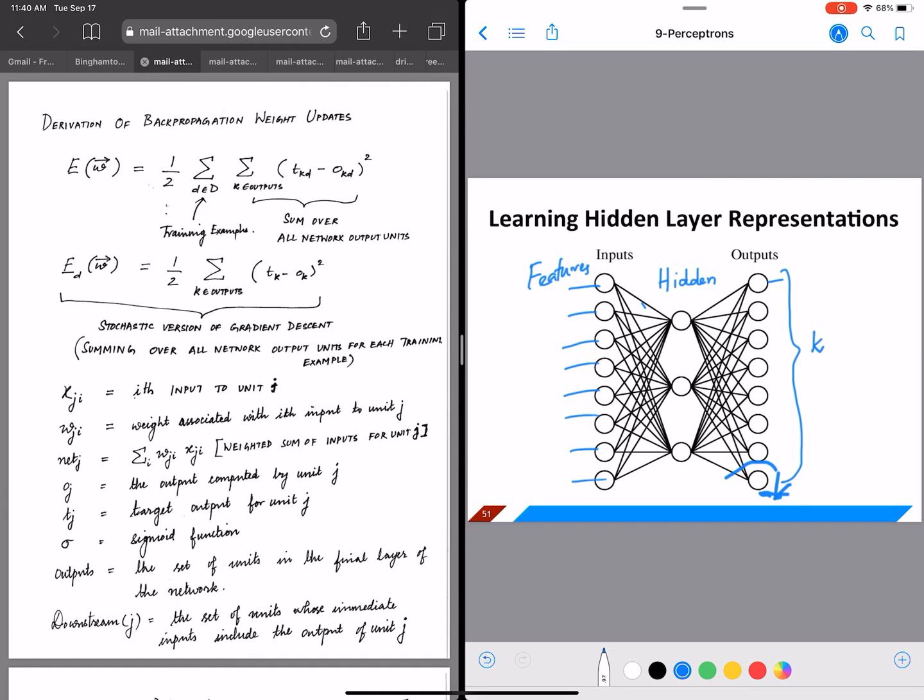And here for each data example d, the output in the kth unit is going to be okd - k is the output of the dth example.